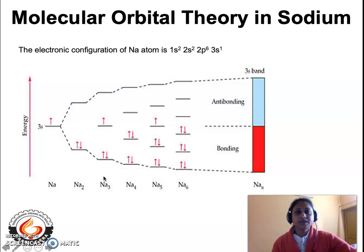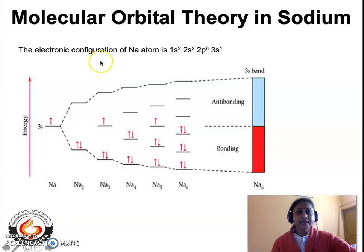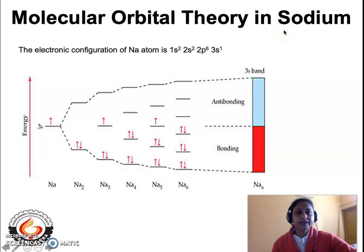Let us come to the molecular orbital theory. We have already dealt with its postulates and its application to homonuclear diatomic molecules as well as heteronuclear diatomic molecules. In this metallic bonding topic, we are going to extend the postulates of molecular orbital theory to metals. The typical example of a metal that we are considering is the sodium metal.